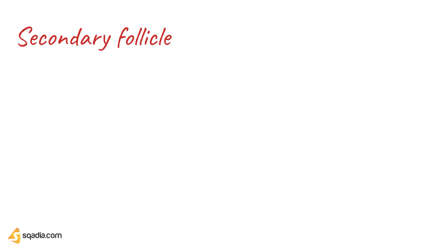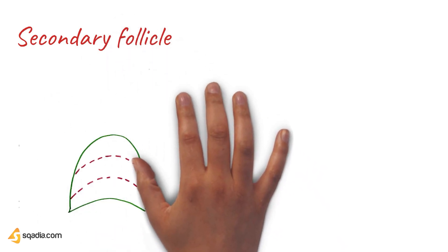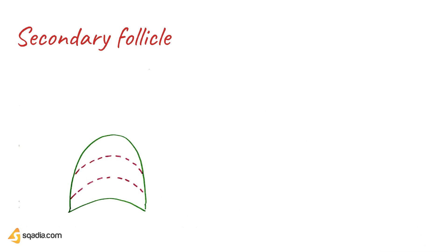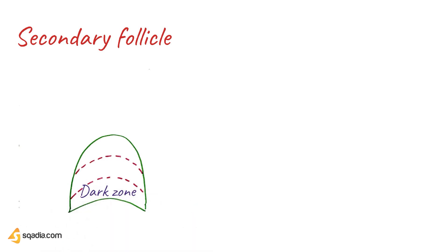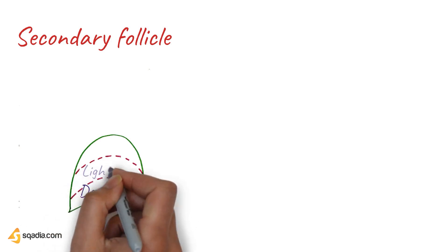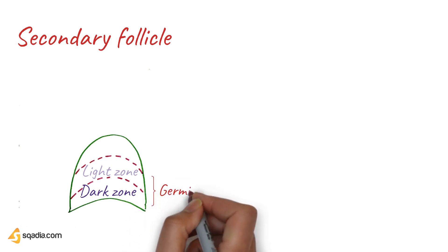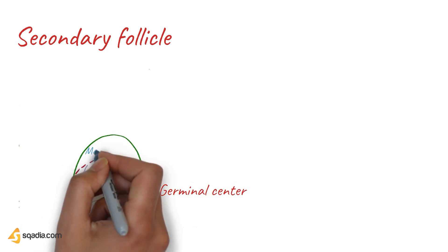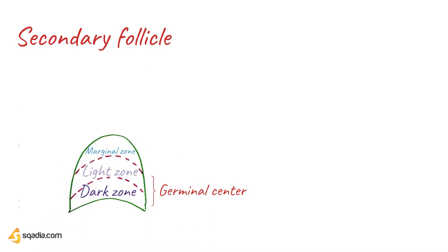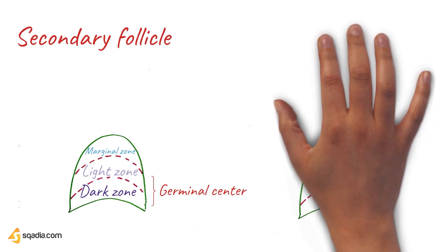Once the antigen enters the lymph node, the secondary follicle will be formed. Three distinct zones are created: the dark zone and the light zone, which together form the germinal center, and the marginal zone, which contains the naive cells now marginalized to the periphery of the follicle.